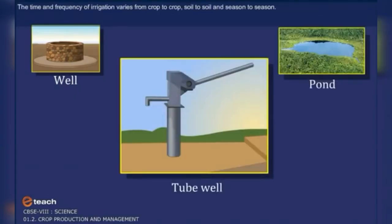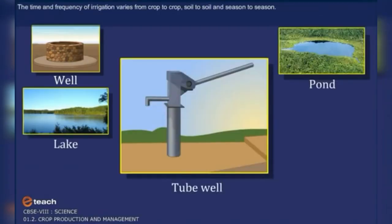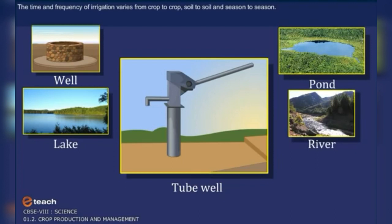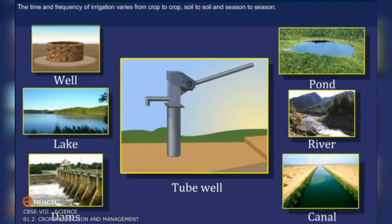The time and frequency of irrigation varies from crop to crop, soil to soil, and season to season. Sources of irrigation are wells, tube wells, ponds, lakes, rivers, dams, and canals.